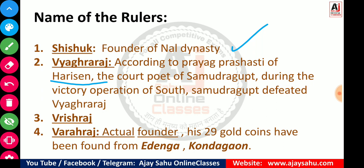The third ruler is Vrish Raj — just remember the name normally. The fourth ruler is Varah Raj, and he is very important because he is the actual founder of the Nal dynasty. His time period is 400 to 435 AD — that is why we say the dynasty starts from the 4th–5th century. His 29 gold coins have been found from Edinga, Kundagaon. He was one of the most important rulers of the Nal dynasty.